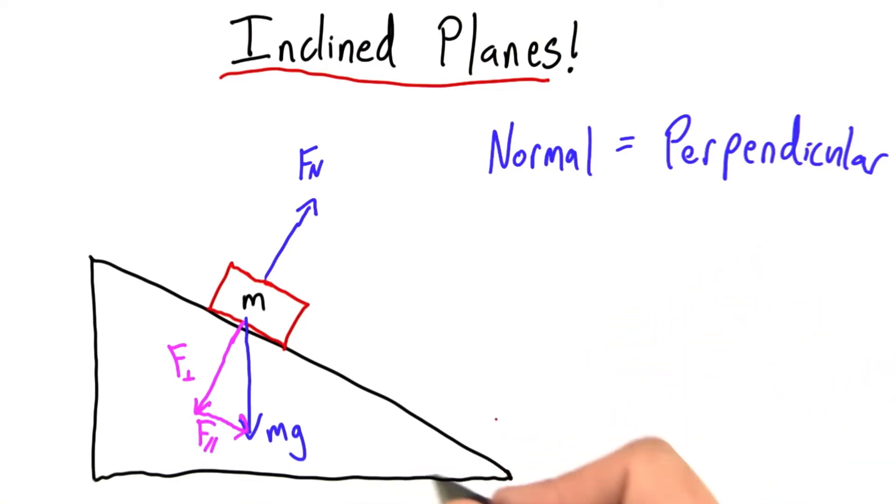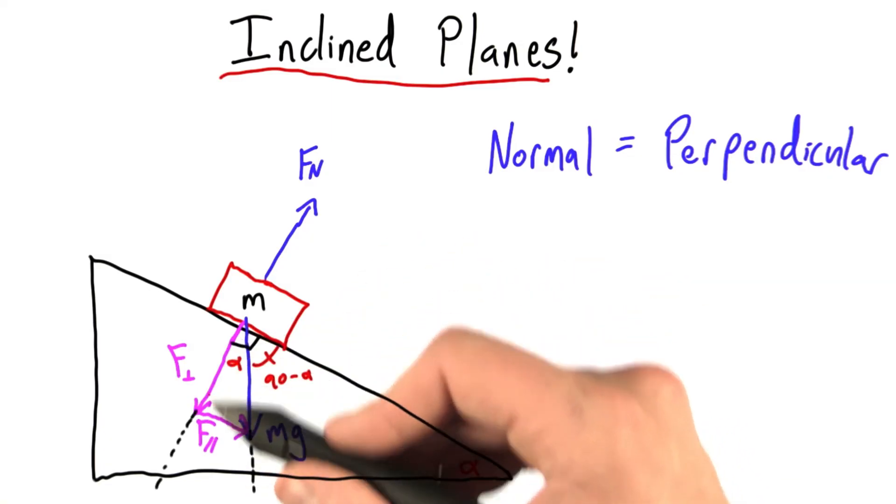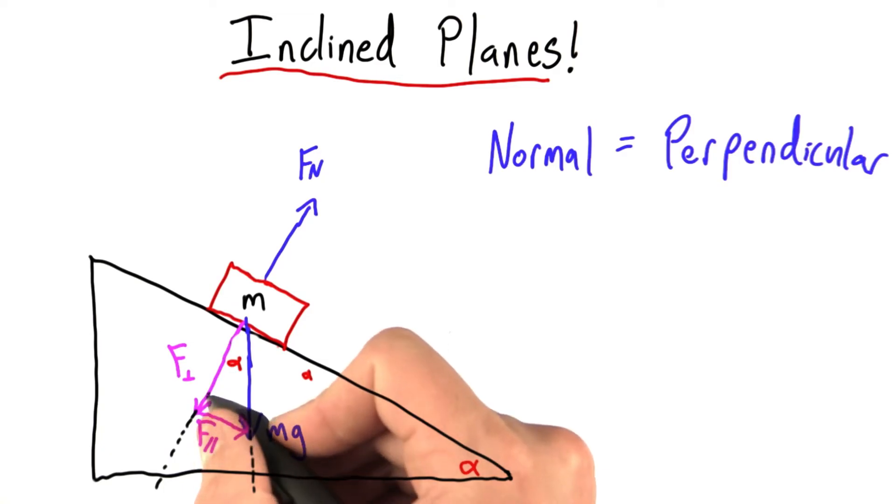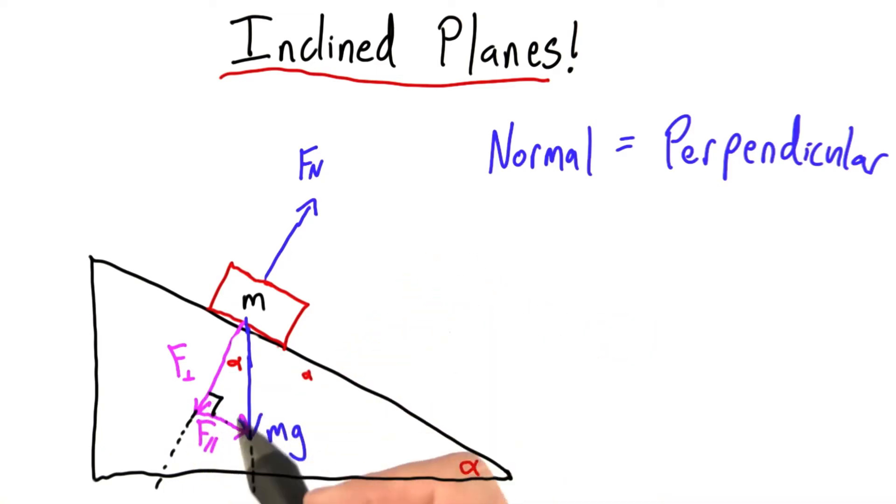Now, the thing that's really cool is that if this plane was inclined at an angle alpha, we can do some geometry to show that this angle here inside this triangle is also equal to alpha. And since this here is a right angle,